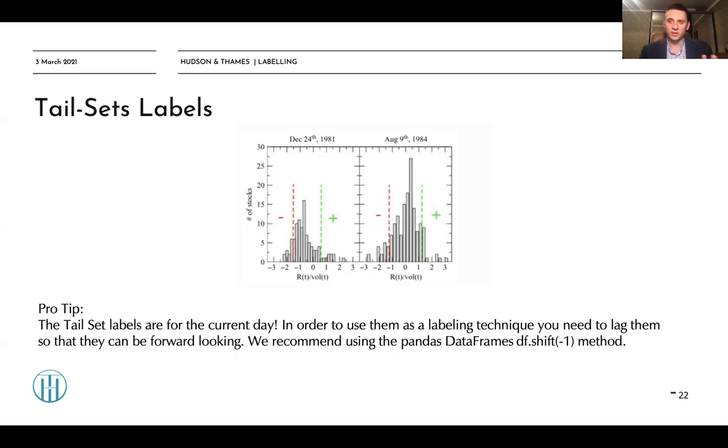So there is a very important pro tip in using tail sets labels, is that the tail sets labels generate labels for the current date. So if you want to use it as a labeling technique, you need to lag them so that they can be forward-looking. We recommend using the pandas dataframe shift with the lag of minus one. So when you lag with minus one, you just shift your label into the future method. So in this case, your tail sets labels become forward-looking. So let's take a look at the signature of this function in MLFinLabs documentation.